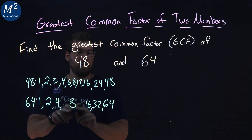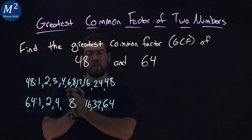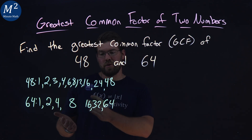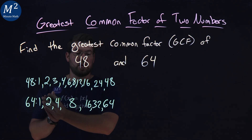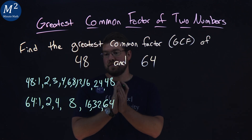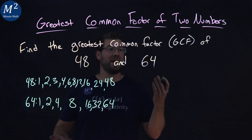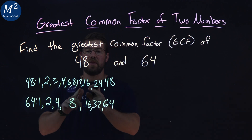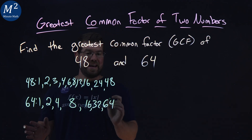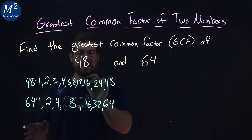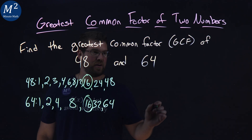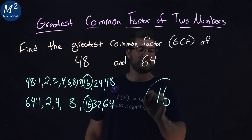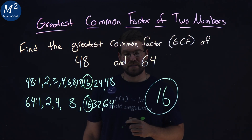So we're going to write that once right there. And once we have the number multiplied by itself, we're done — we don't need to keep going up. Now we've listed all the factors of 64. So if you want to find the greatest common factor of our two numbers, we're going to find the greatest number that's in both of them. And that's going to be our 16. So our greatest common factor between 48 and 64 is 16.